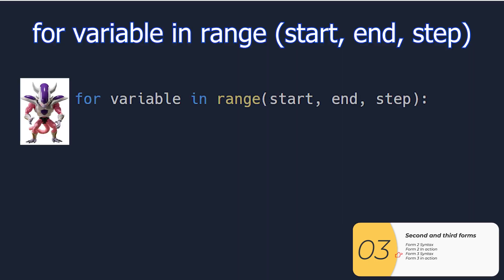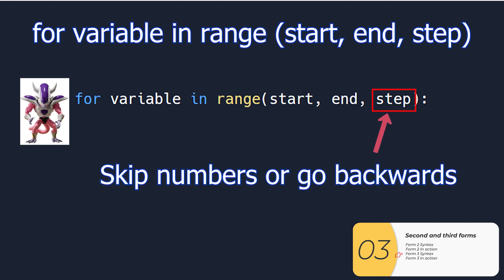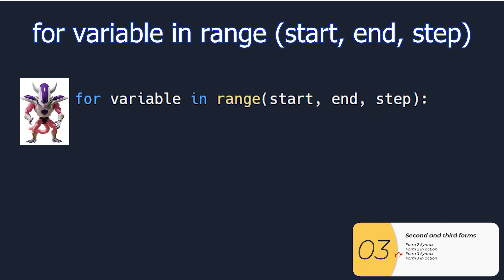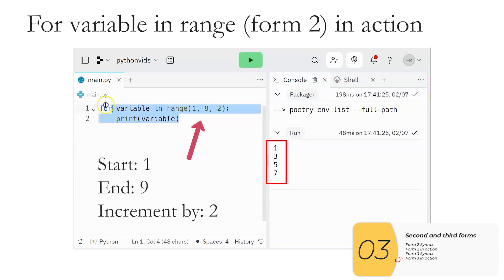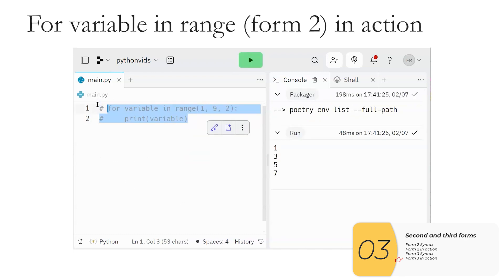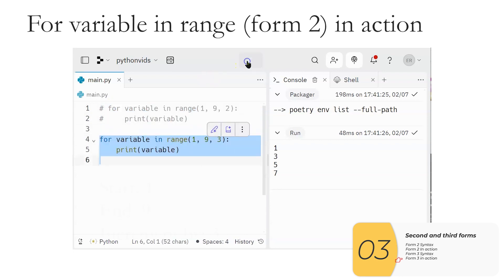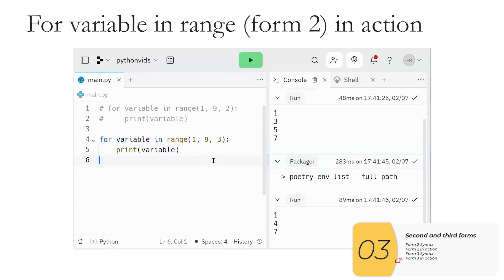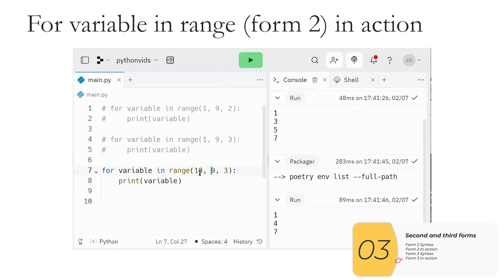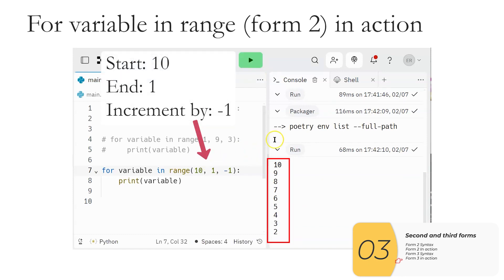Then we have a third form of for variable in range, where we have three things inside the parentheses: the start, the end, and the step. The step controls how much we increment, either forward or backwards. Here I'm generating numbers between one and nine, incrementing by two. I can do the same thing stepping by three. I can even have a negative step — for example, generating numbers from 10 down to one descending.